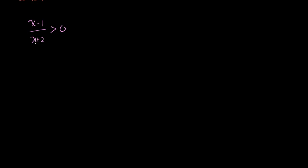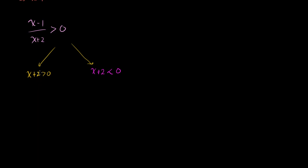One thing you might think is to multiply both sides by x plus 2 to clear the denominator. But the problem is, when you multiply both sides of an inequality by a number, if you're multiplying by a positive you keep the inequality the same, but if you're multiplying by a negative you have to switch it. We don't know whether x plus 2 is positive or negative. Also, x plus 2 cannot equal 0 — that would make the expression undefined. So we do both situations.